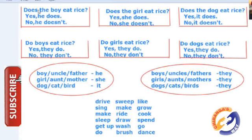For 'does the boy eat' — boy, uncle, father — we are not repeating the noun. These are nouns and we use a subject pronoun instead. If it is a male we use 'he', female we use 'she', and for an animal or a thing we use 'it'.